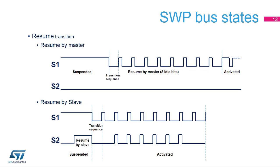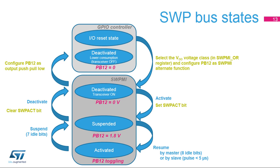Either the master or the slave can initiate a communication by sending a resume sequence. A resume sequence by the master consists of a transition sequence and 8 idle bits, whereas a resume signal by the slave consists of drawing current until the master detects it, and as a consequence starts to toggle the S1 signal to allow the slave to start transmitting data. Here is an overview of how the SWP bus states are managed by the STM32. You can refer to the reference manual for more details about the initialization and activation procedures.